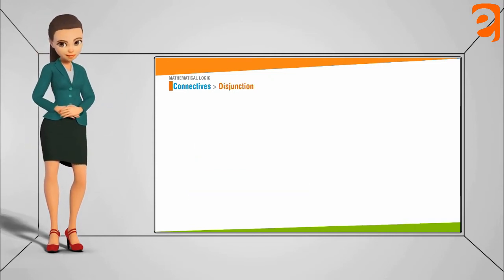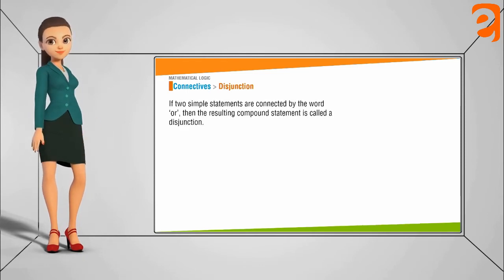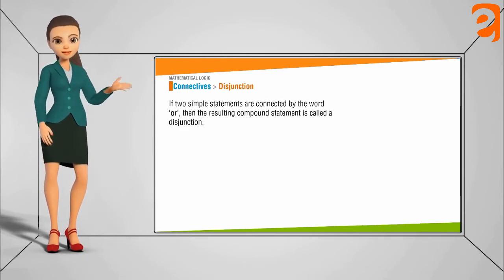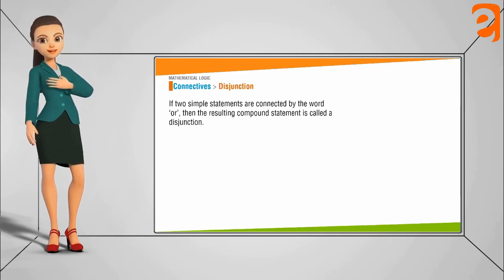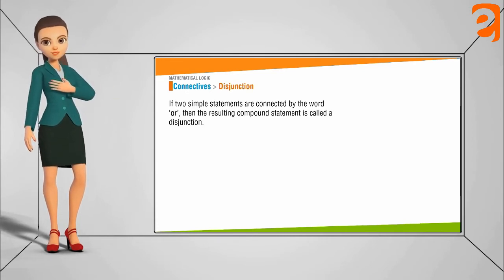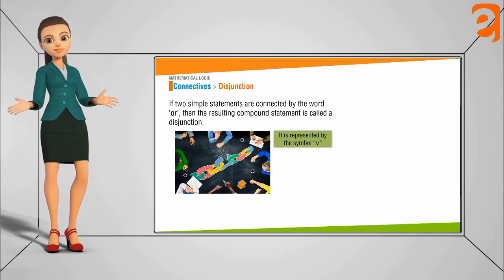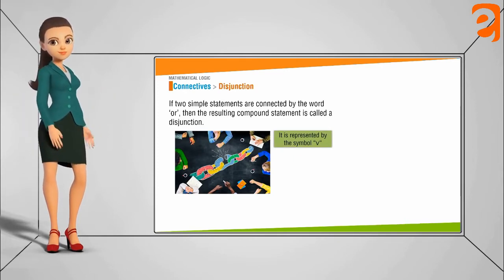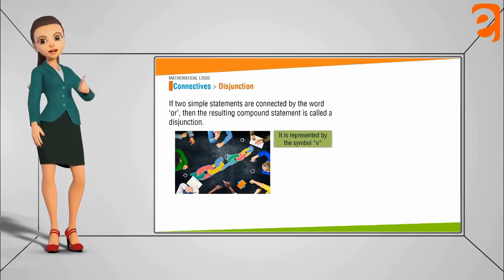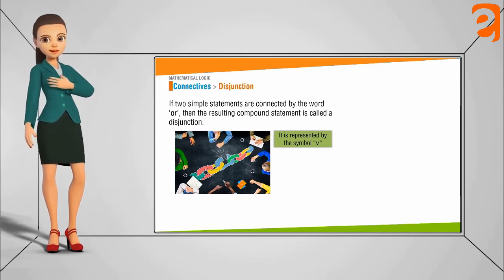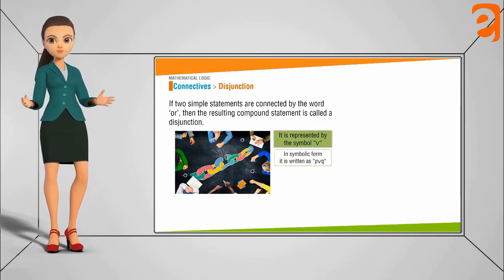Now let's define what we mean by disjunction. If two simple statements are connected by the word 'or', then the resulting compound statement is called a disjunction. It is symbolically represented by the letter v, written as p∨q.